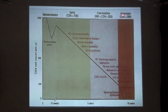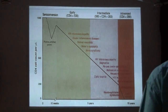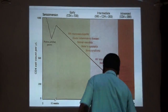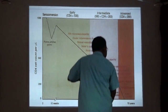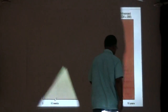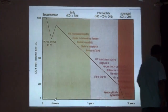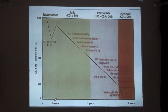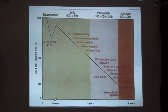When it is advanced — that is, CD4 below 200 — we can have opportunistic infections like CMV retinitis, toxoplasmosis, and Kaposi's sarcoma, etc.